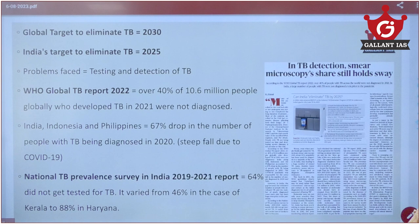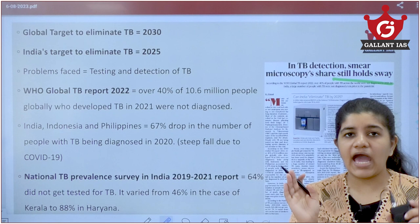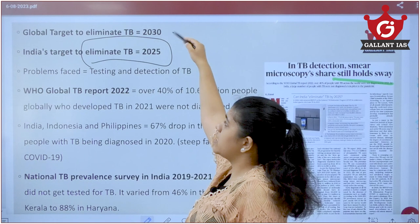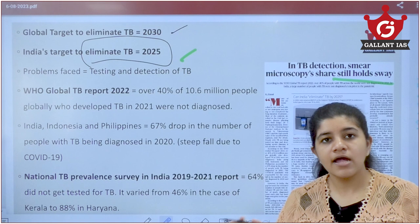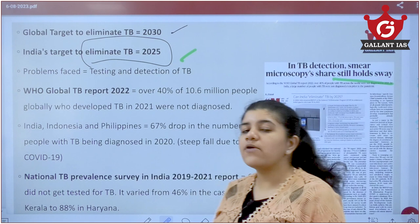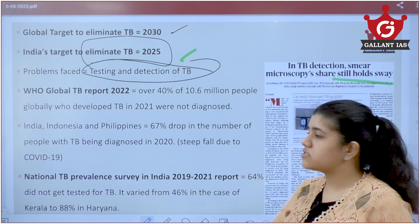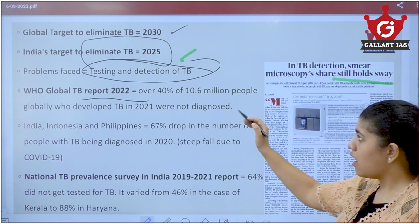Moving on to TB: smear microscopy still holds a large share of TB testing. India's target is to eliminate TB by 2025, whereas the global target is 2030. India has kept its target five years ahead to achieve it earlier, but India faces a lot of problems with the testing and diagnosing of TB, which will be discussed next.